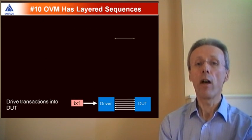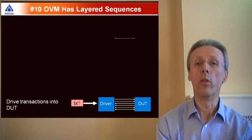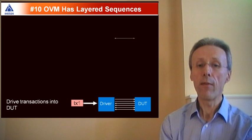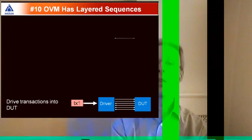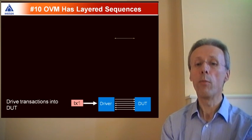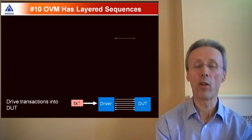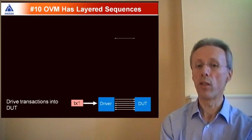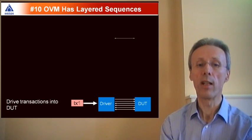Finally, number eleven: OVM has very flexible support for sequences. So starting at the lowest level, a sequencer will generate transactions which communicates to the driver using transaction level ports and exports. The driver then converts those transactions into pin wiggles on the DUT.